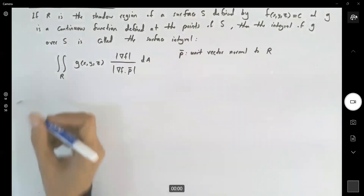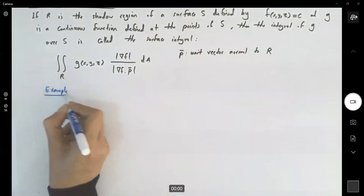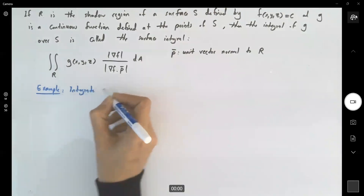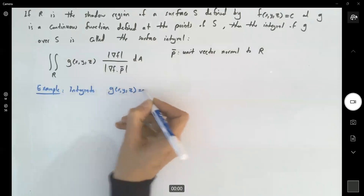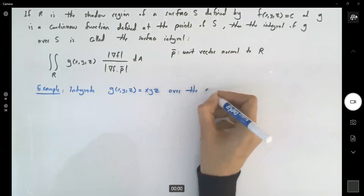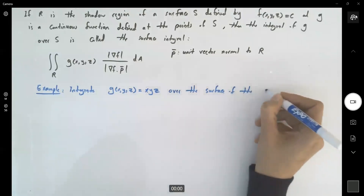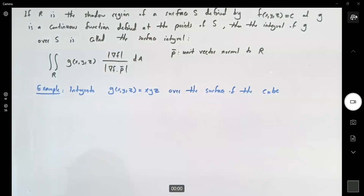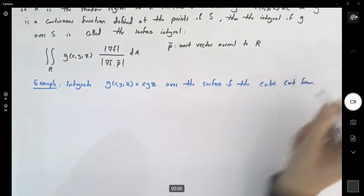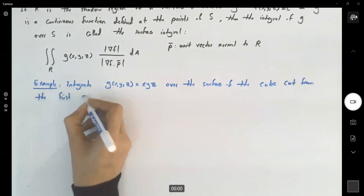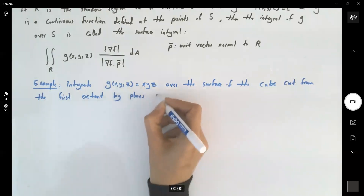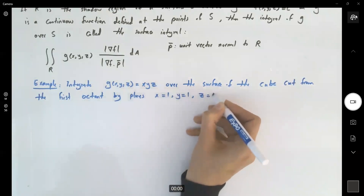The example says: integrate the function g(x, y, z), which is defined as x times y times z, over the surface of the cube cut from the first octant by the planes x equals to 1, y equals to 1, and z equals to 1.